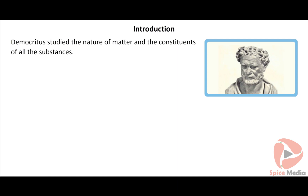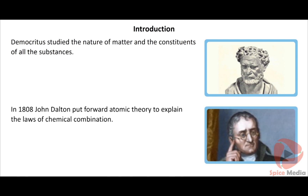The concept of an atom originated from Greek philosophers like Democritus and John Dalton. Democritus studied the nature of matter and the constituents of all substances. In 1808, John Dalton put forward atomic theory to explain the law of chemical combination. According to him, an atom is the smallest unit of matter which takes part in a chemical reaction, and he considered atoms to be indivisible particles.